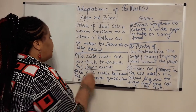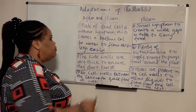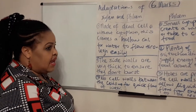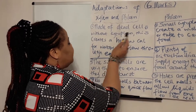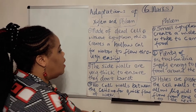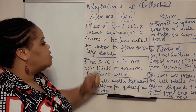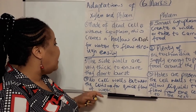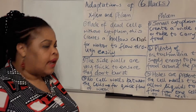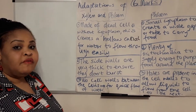Really quickly then, there are some adaptations that enable these vessels to carry out their function properly. Specifically for xylem, I have outlined three here. They're made of dead cells without cytoplasm — the cells do not have cytoplasm. This creates a hollow canal for water to flow through easily. The side walls are very thick to ensure they don't burst. And there are no cell walls between the cells, so that there is quick flow of water.